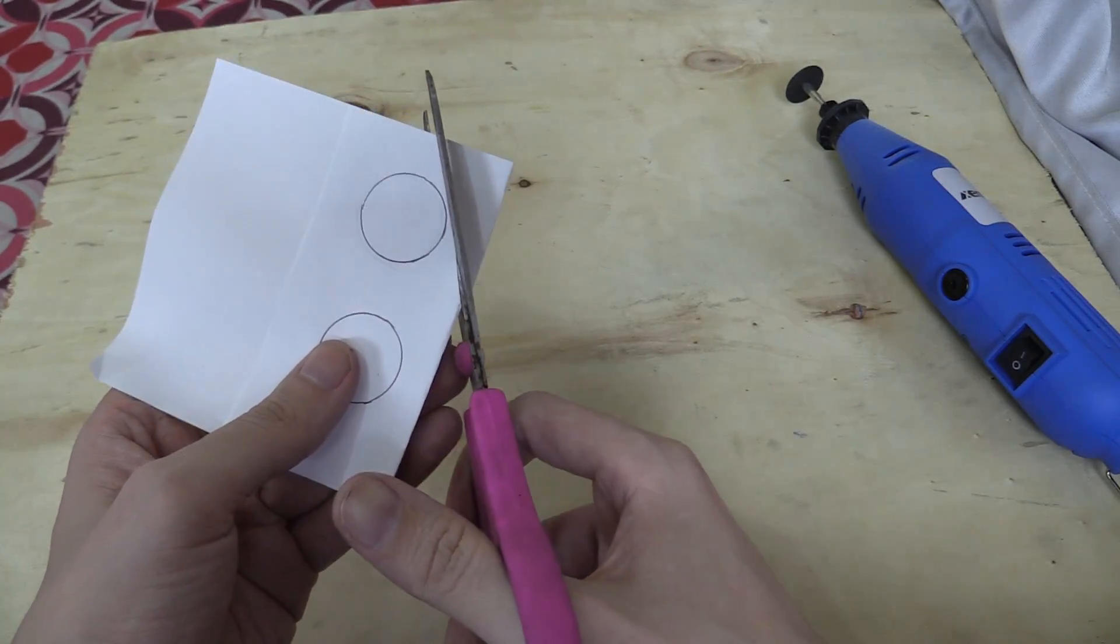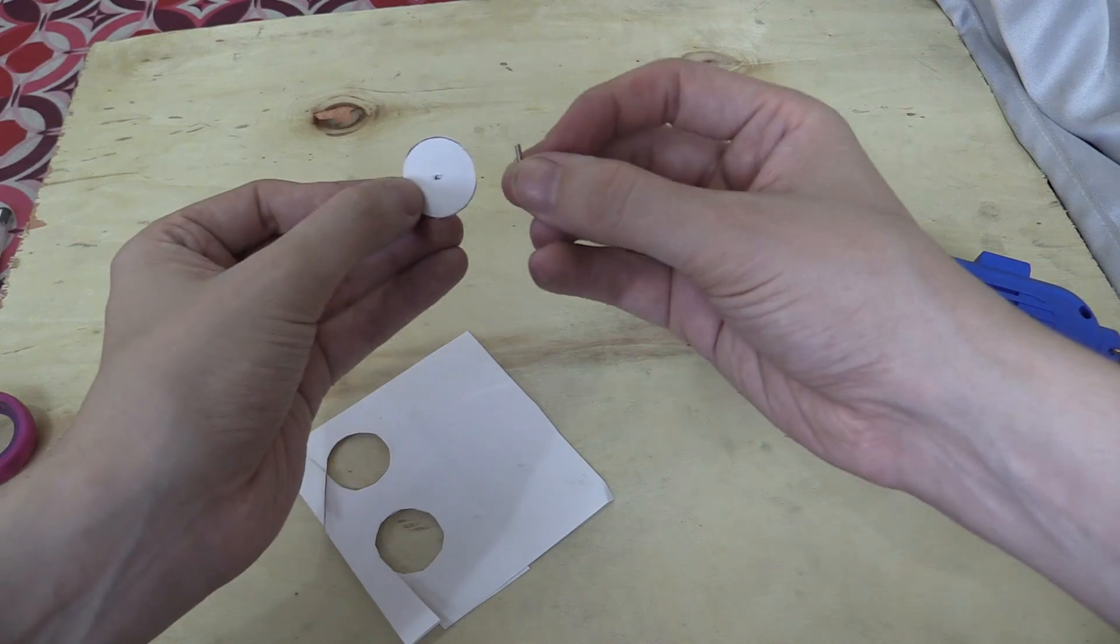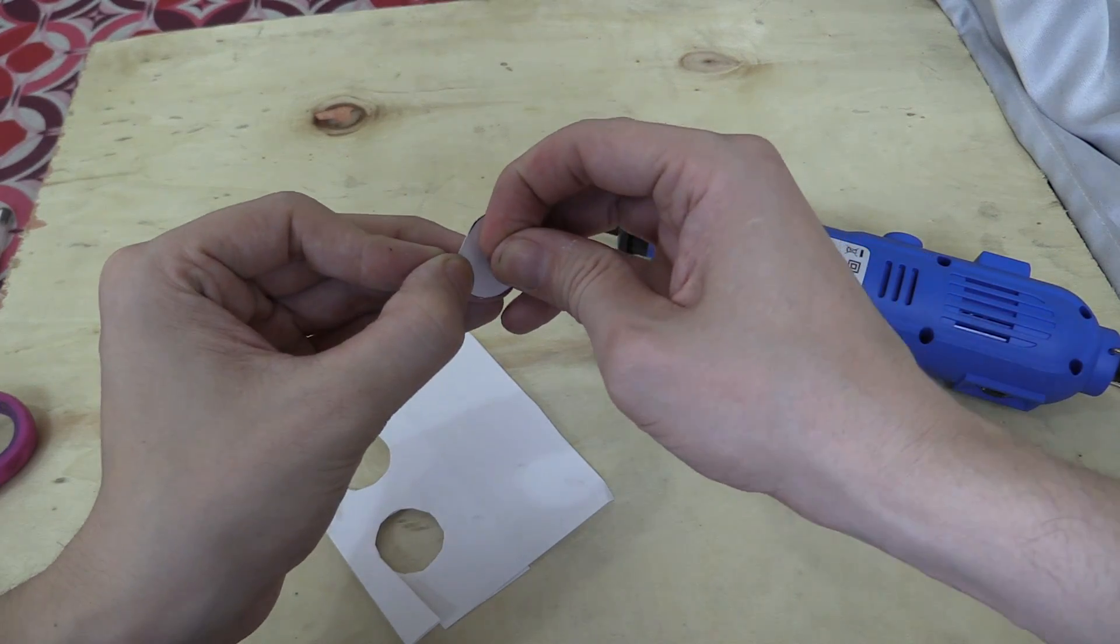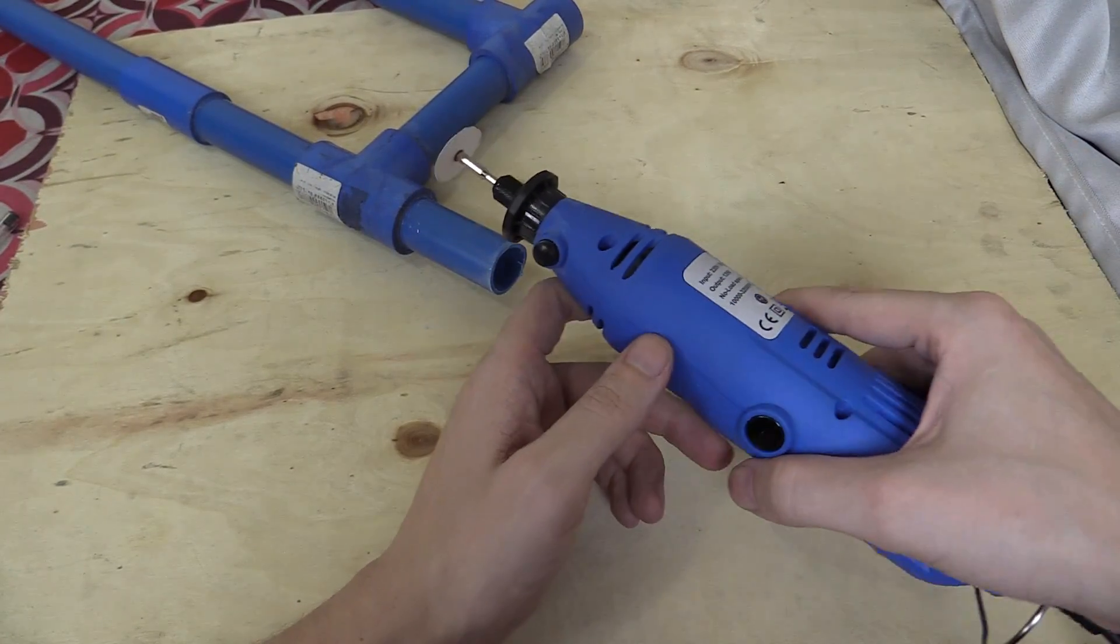So let's go ahead and cut out our blades. Now we can put the screw through the blade and fit it to the rotary tool. You can see we've got the paper blade fitted on there and we're ready for the moment of truth.